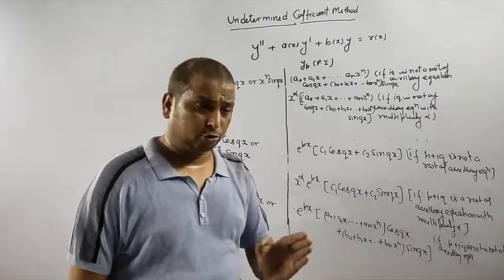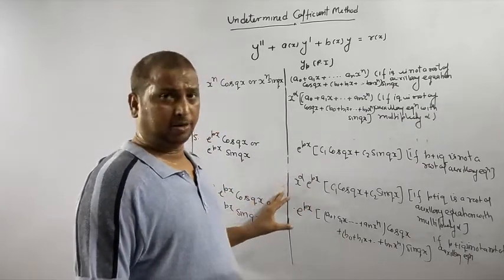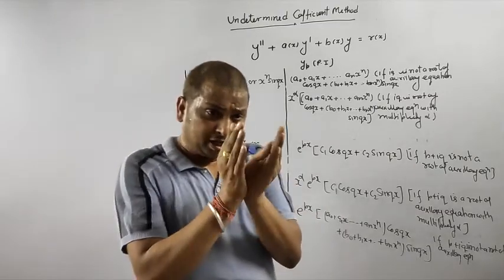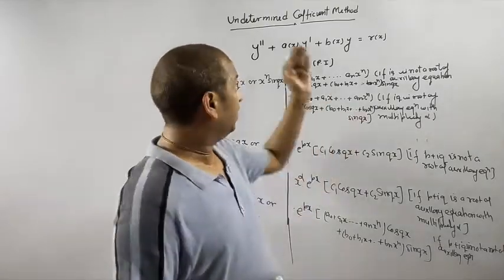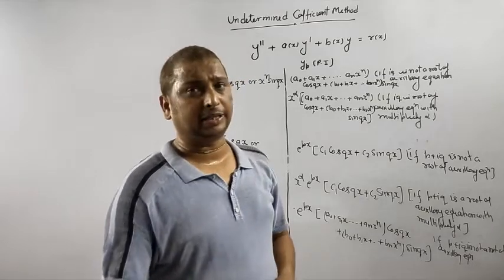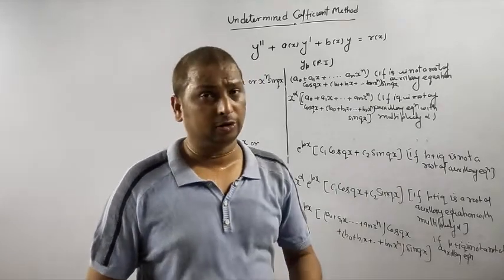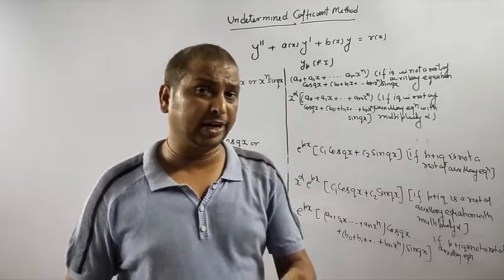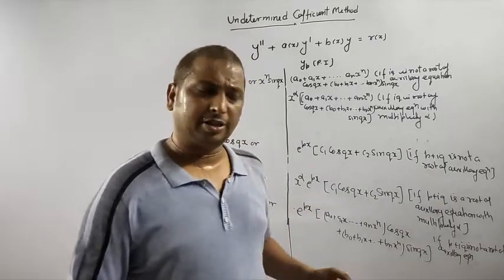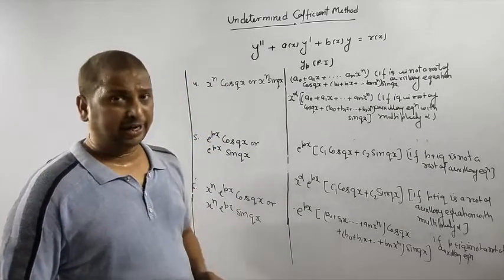Remember this table because it will play a very important role. Once you know this table, you can easily write yp — the particular integral. Once you have yp, as the name suggests in the undetermined coefficient method, whatever constants you have chosen, you just need to determine them. To do that, find y-prime and y-double-prime, substitute into the given equation, and solve. In the next video I will explain with one example, so please learn this table first. Thank you.